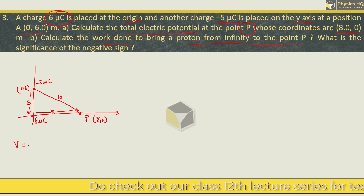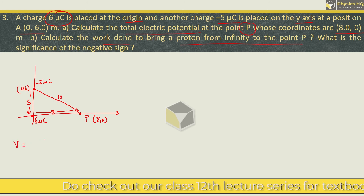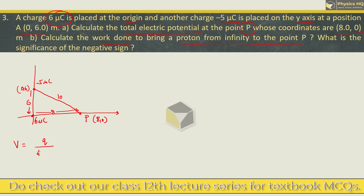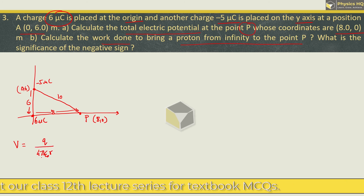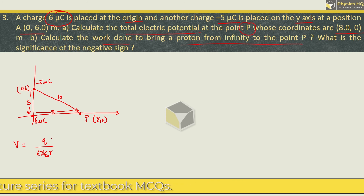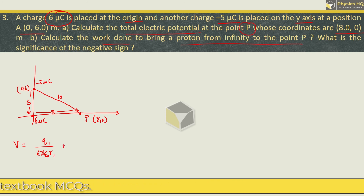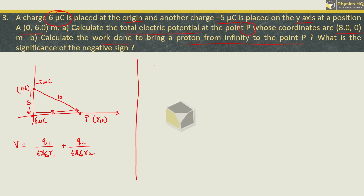Potential at any point is given by Q upon 4 pi epsilon naught into R, where R is the distance of the point from the charge. Since we have two charges, the total potential will be Q1 upon 4 pi epsilon naught R1, plus Q2 upon 4 pi epsilon naught R2. Let us try to solve this. V equals 1 upon 4 pi epsilon naught.